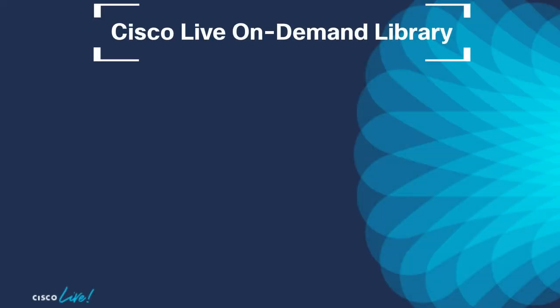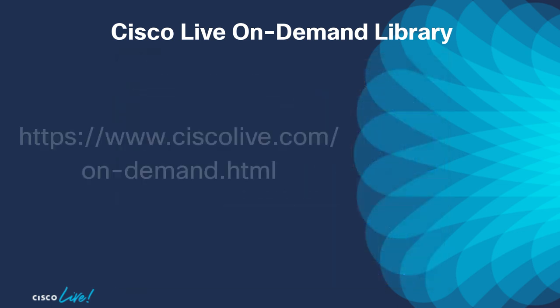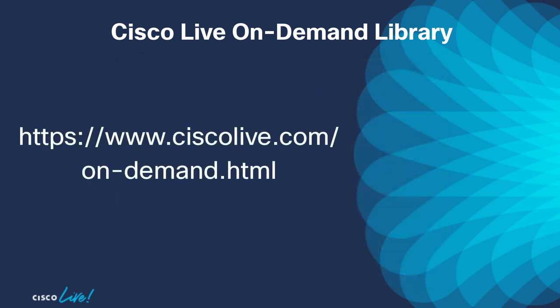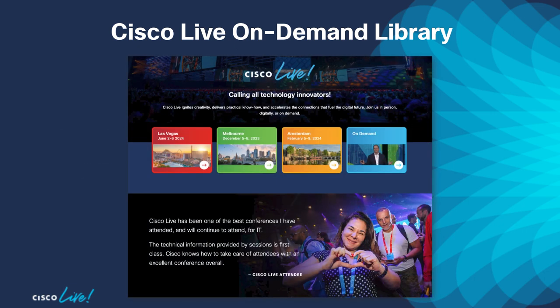If you are unable to attend a live session, you can watch it in the on-demand library after the event. You can access the Cisco Live on-demand library for free at this URL. The library offers more than 10,000 hours of content and 7,000 sessions you can stream online or download to watch offline at your convenience, anytime, anywhere, for free.